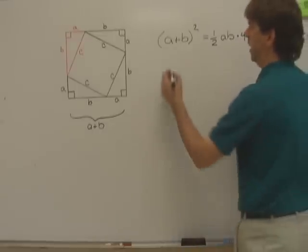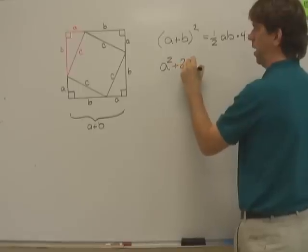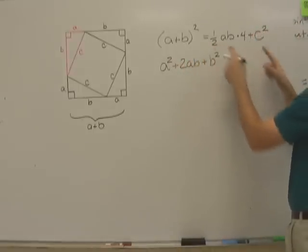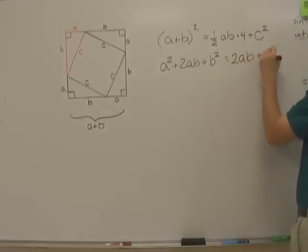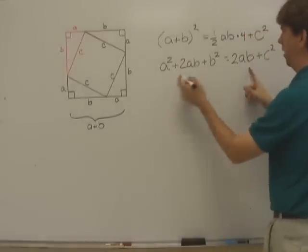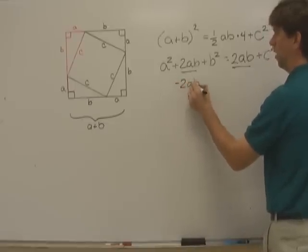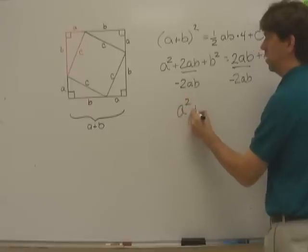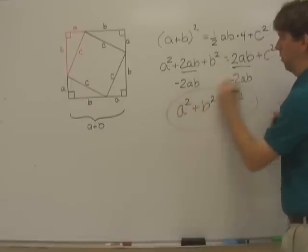If we expand the left side, we have A squared plus 2AB plus B squared. On the right side, we've got some cancellation that takes place. We have two times A times B plus C squared. We then look at the fact that we've got 2AB on both sides of this equation. We subtract 2AB from both sides, and almost magically, A squared plus B squared is equal to C squared. The Pythagorean theorem.